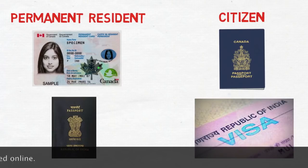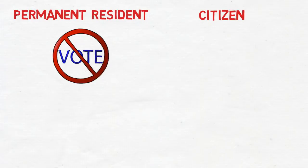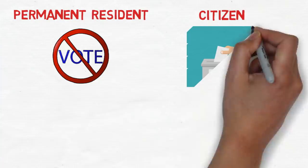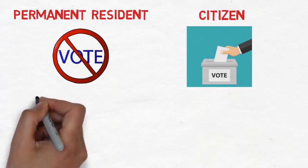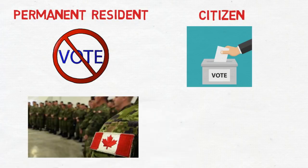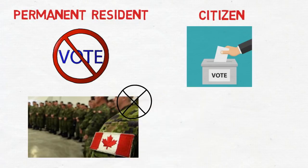As a permanent resident you won't have the right to vote in Canada, but as a citizen you do have the right to vote in different elections. The same is the case with Australia — the basic rules are very similar.